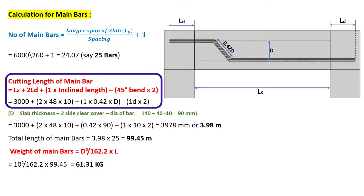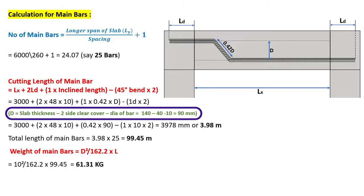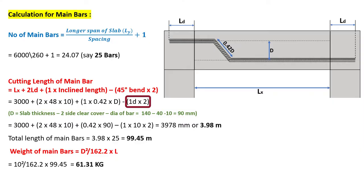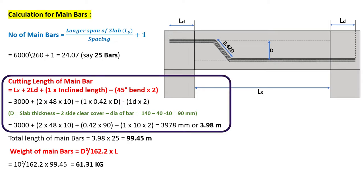The cutting length of main bars equals shorter span plus twice the development length plus 1 times crank length minus bend deduction. The shorter span is 3000 mm; development length is 48D where D is 10 mm. The crank length is 0.42D, where D equals slab thickness minus twice clear cover minus dia of bar: 140 − 40 − 10 = 90 mm. The bend deduction for a 45-degree bend is 1D, and with 2 bends, total bend deduction is 2D (D = 10 mm). Substituting all values, the cutting length of main bar is 3.98 meters.